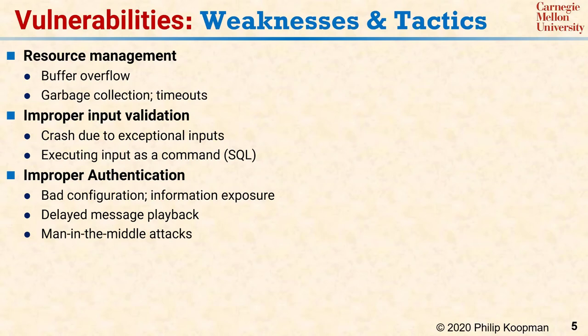Improper authentication takes a variety of forms. The system might not check that a password has been provided before a sensitive operation, or it might expose sensitive information without a password. A system may also be vulnerable to a delayed message replay attack — for example, unlocking a door with a stored command when it should stay locked. Man-in-the-middle attacks involve an adversary intercepting a message, potentially modifying it, and forwarding it without the receiver knowing it received a corrupted message.